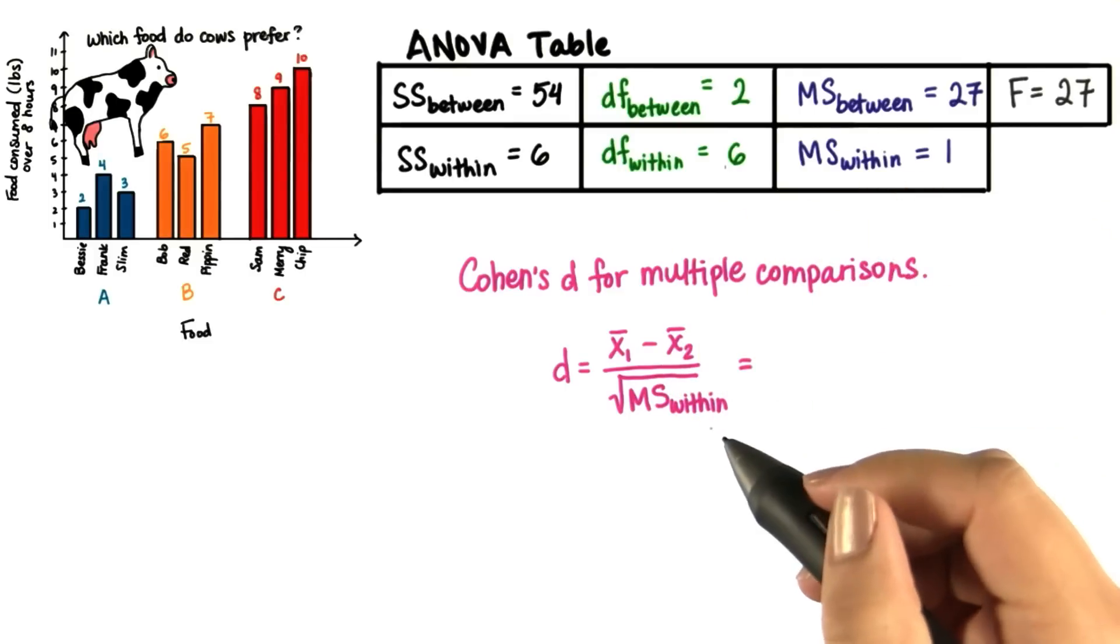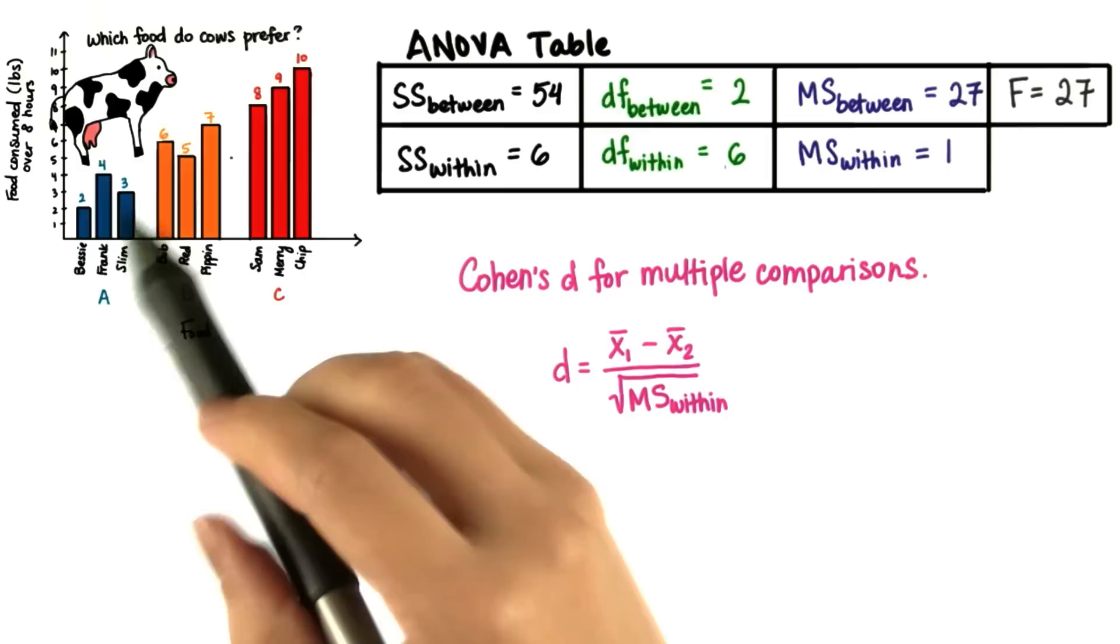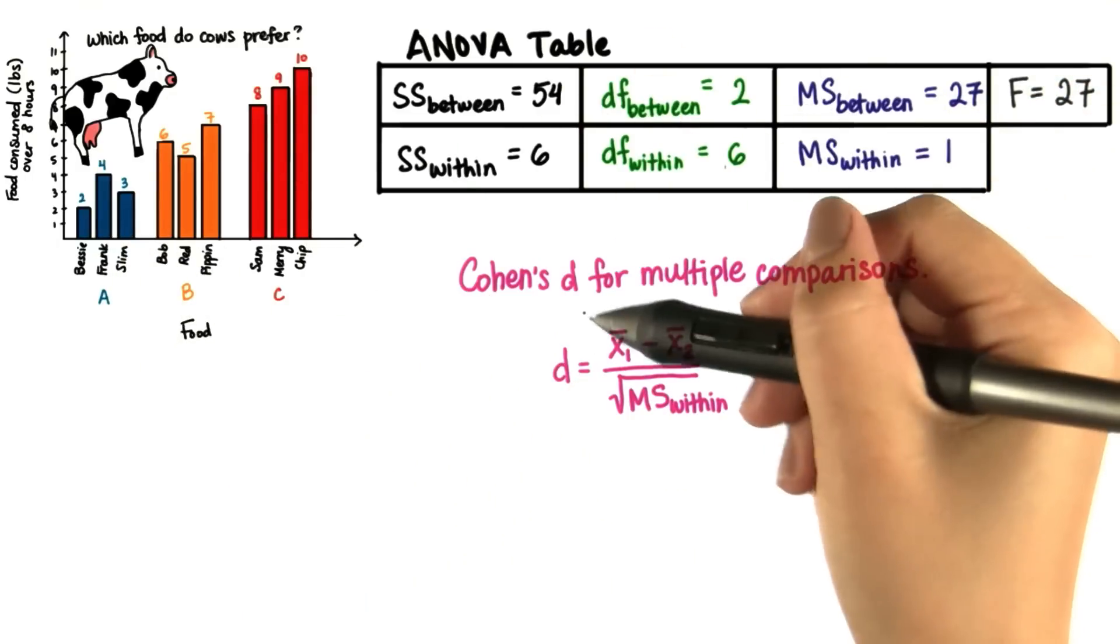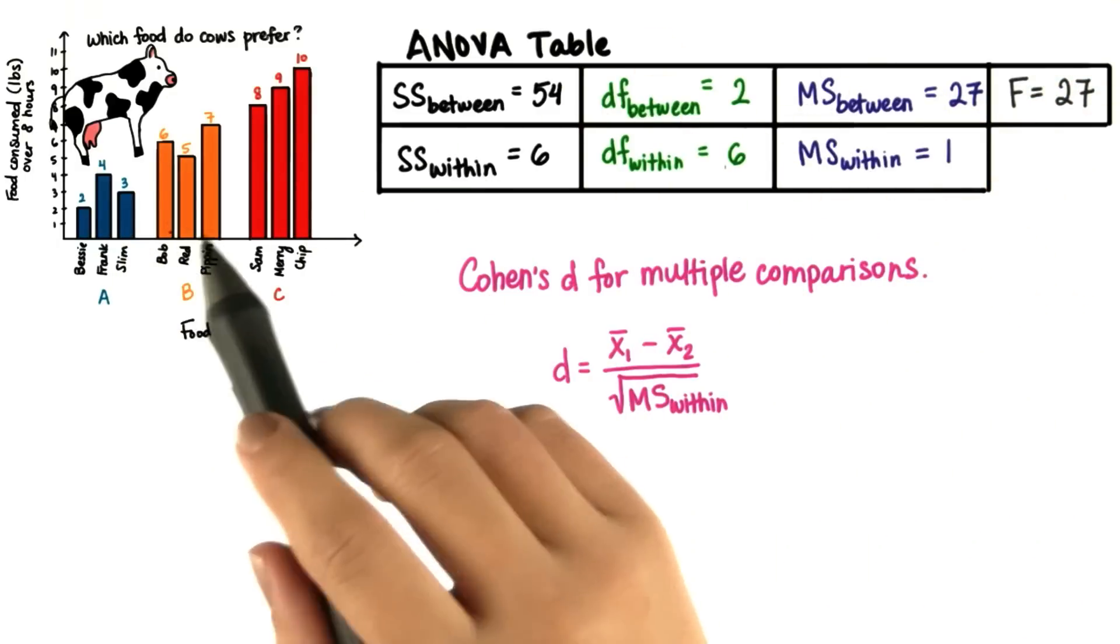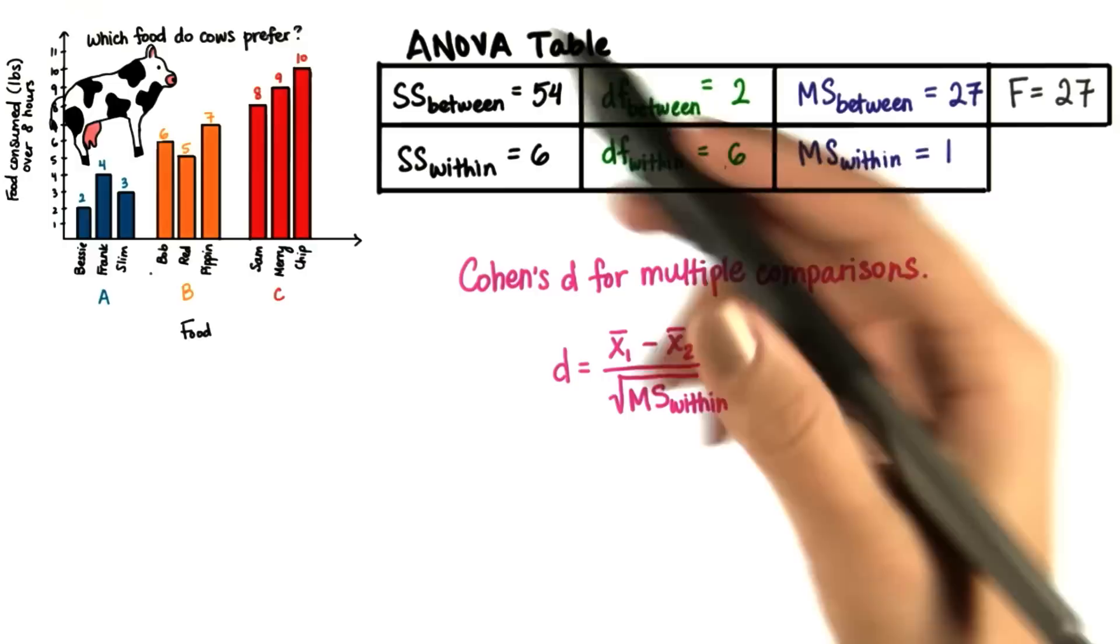So that's the formula for Cohen's d. However, now we have three samples. Therefore, we'll compute three Cohen's d's, one for each pair of samples.